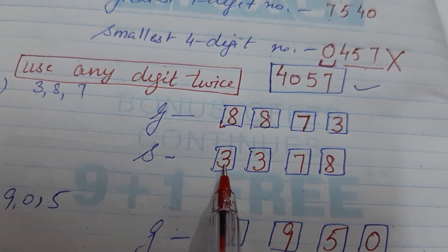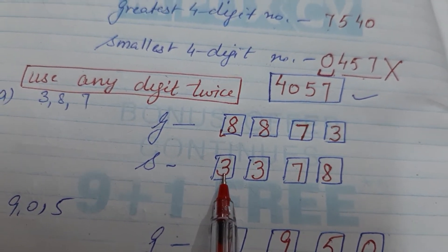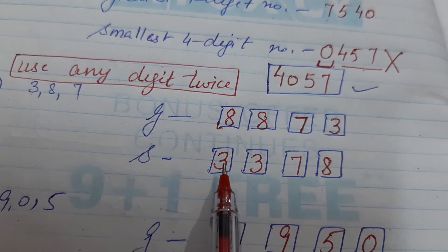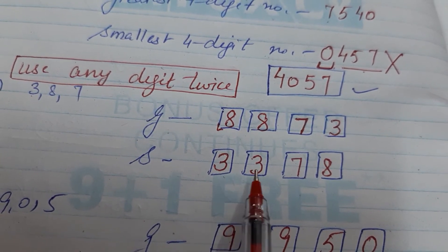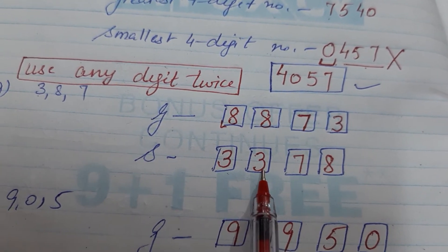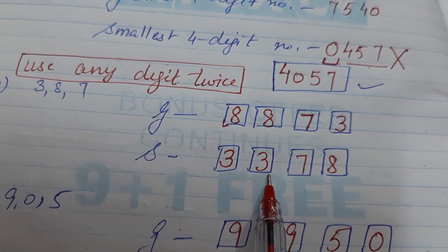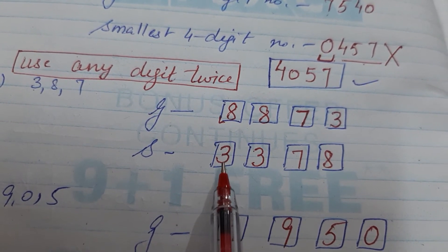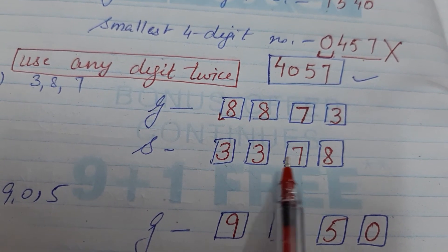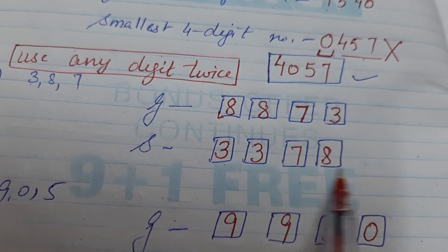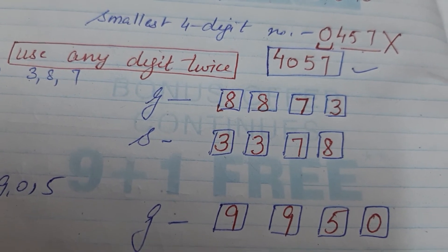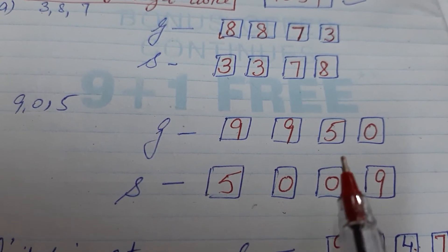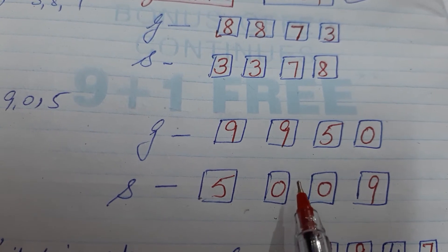For the smallest number, we start with the smallest digit, which is 3. We can use the digit twice, so we write 3 again. Then write the remaining digits in increasing order: 3, 3, 7, 8. It becomes 3378 — three thousand three hundred and seventy-eight.